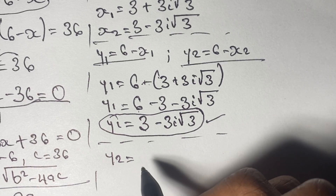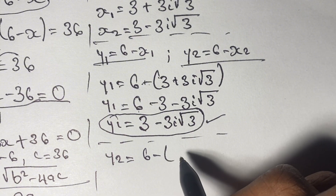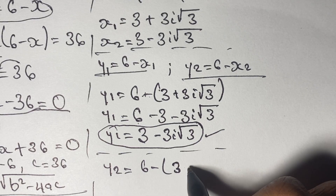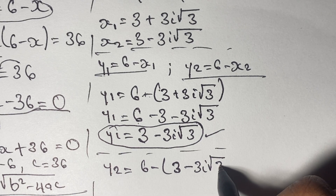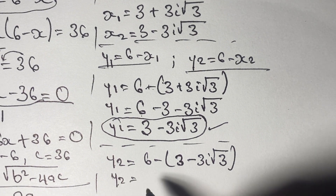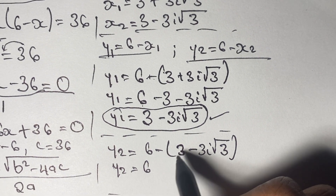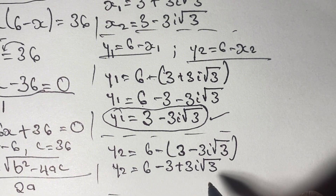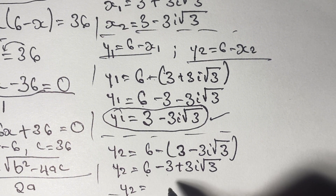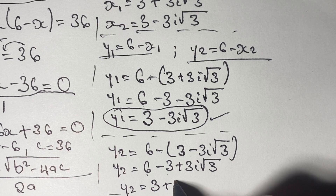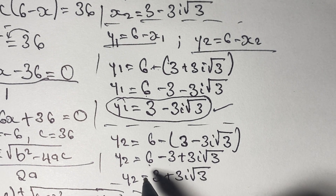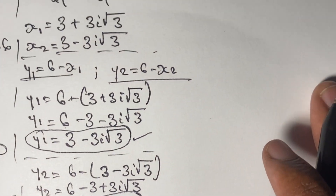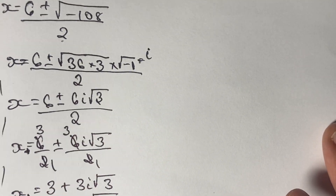As we said before, our solutions will be complex, and indeed we have pairs of complex solutions. The second solution for y is 6 minus the second solution of x, which is 3 minus 3i√3. So y is equal to 6 minus 3, and negative times negative gives us a positive, so we have positive 3i√3. Therefore our second solution for y is y₂ = 3 plus 3i√3. We now have a pair of solutions for both x and y.